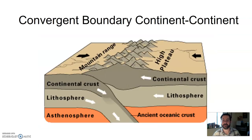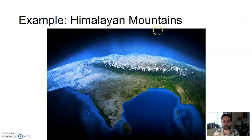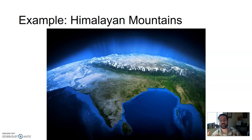Then you have continent to continent collisions. Something still gets subducted because eventually something's got to give, even though they're the same type of material. You can get large mountain ranges and lots of earthquakes, but not a lot of volcanic activity. A great example is the Himalayan Mountains — the plate that India is sitting on is crashing into the Eurasian plate, crumbling and driving up these mountains. You still get a lot of earthquakes in this area.